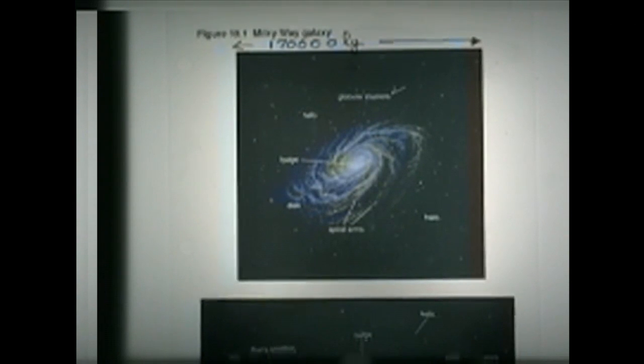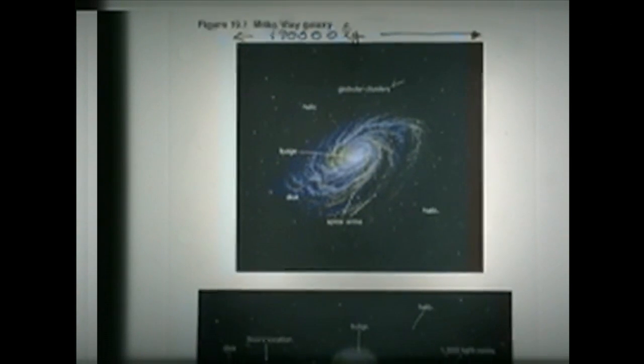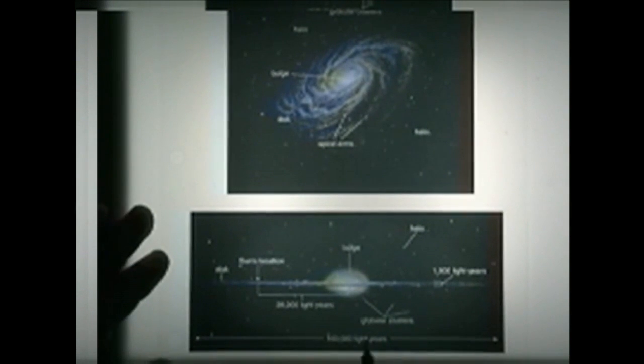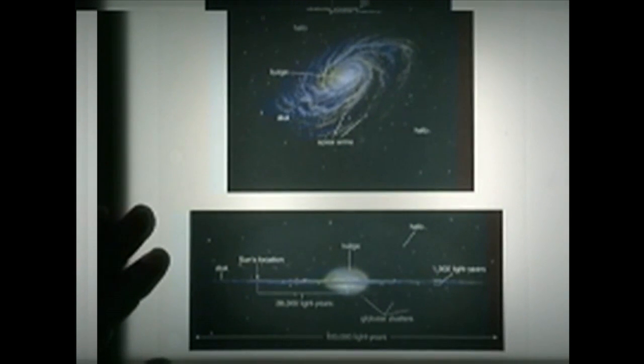A side view of our own galaxy would look something like this. The diameter of the Milky Way is about 100,000 light-years.